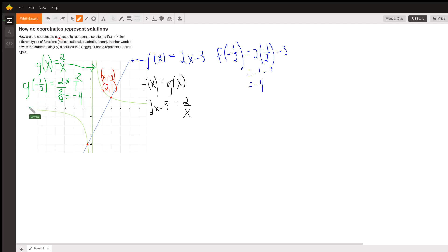So g has the point negative 1 half, negative 4, and f has the point negative 1 half, negative 4. So that point down there in red is a solution because it satisfies both equations.